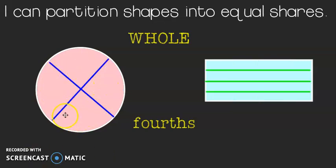Here's another way you might have done it. These lines go horizontal. These are definitely fourths. And how many fourths make up a whole? Four of them. One, two, three, four. One, two, three, four.